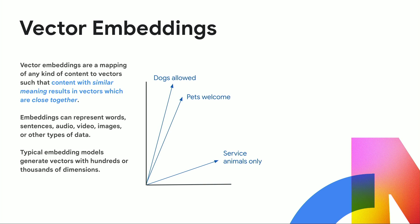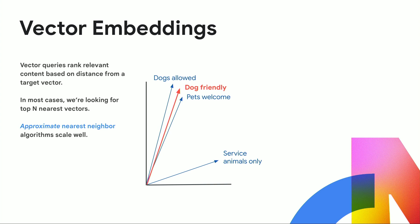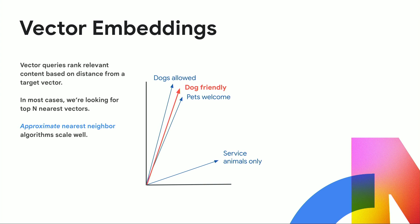If two pieces of content are semantically similar, their vector embeddings are located near each other in the vector space. For example, "dogs allowed" and "pets welcome" are located close to each other, while "service animals only," which has a slightly different meaning, is located farther away. If you insert another text like "dog friendly," it will be located near the other texts with similar semantic meaning. Vector embeddings help classify information, enable faster and more efficient searches, so your Generative AI application provides accurate content quickly.